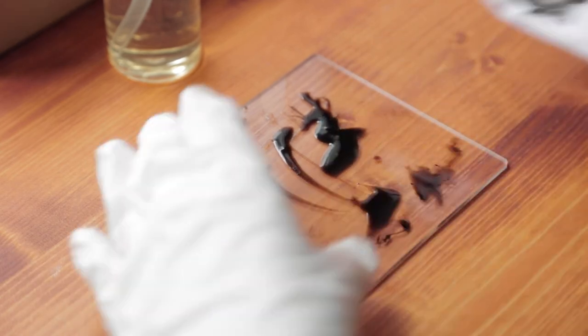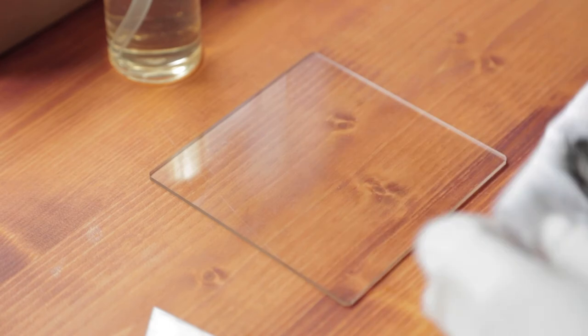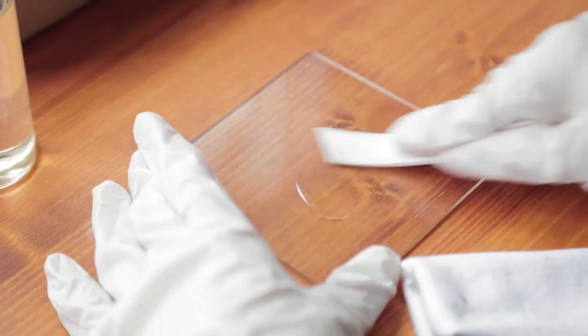If the surface of the black urushi is not smooth, repeat the process in step 4, which is polishing the surface with waterproof sandpaper and painting black urushi.